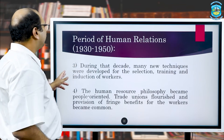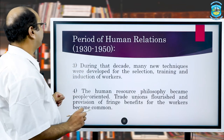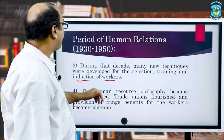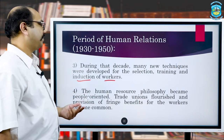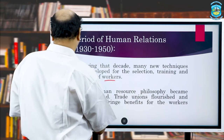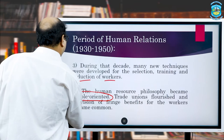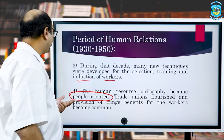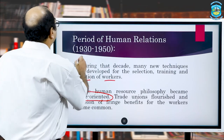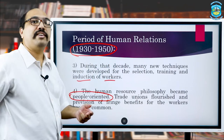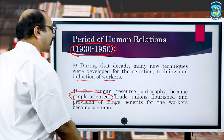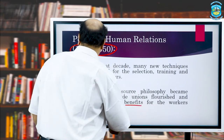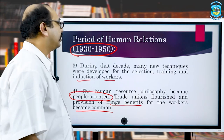During these two decades, many new techniques were developed for selection, training and induction of workers. The philosophy of human resources management flourished and became more and more people oriented. These two decades were basically a time period where HRM got the human face, and people across the discipline started talking about fringe benefits and different modes of labour welfare.